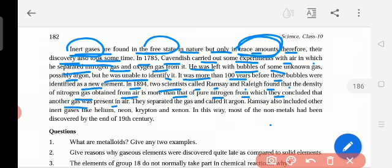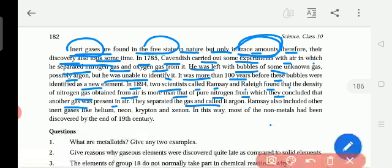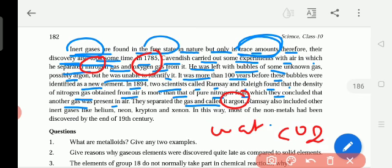They separated the gas and called it argon. Air is the mixture of four gases: nitrogen, oxygen, argon, carbon dioxide, and water vapor is also present in the air.